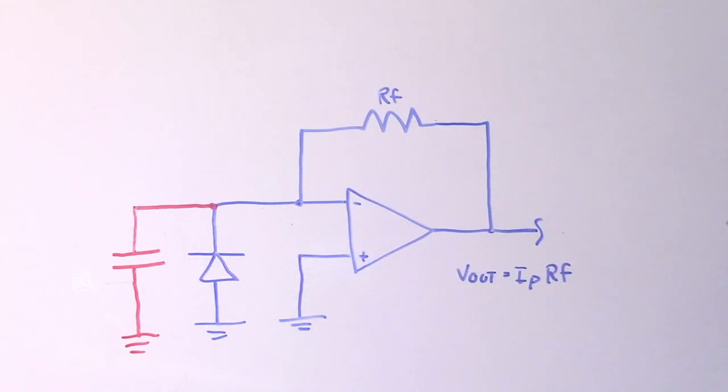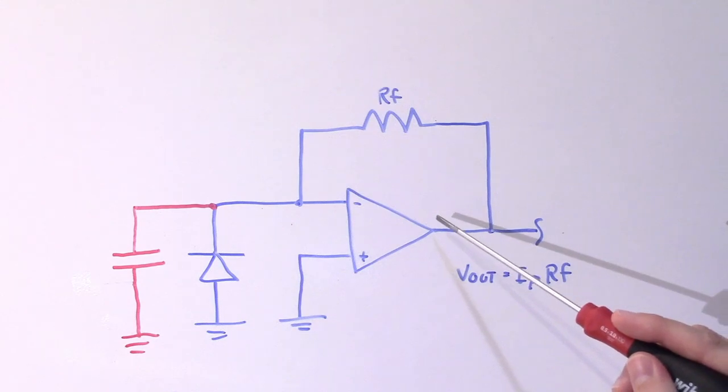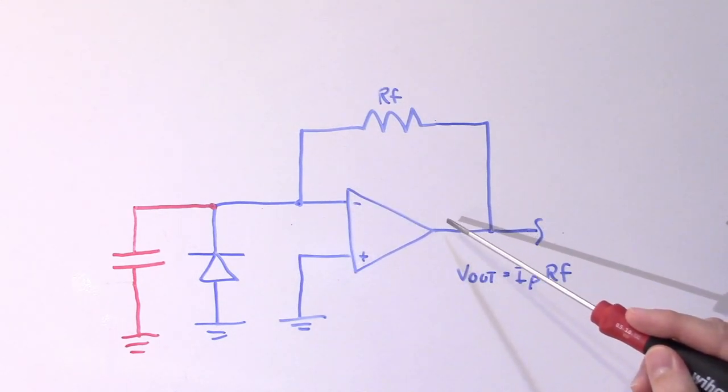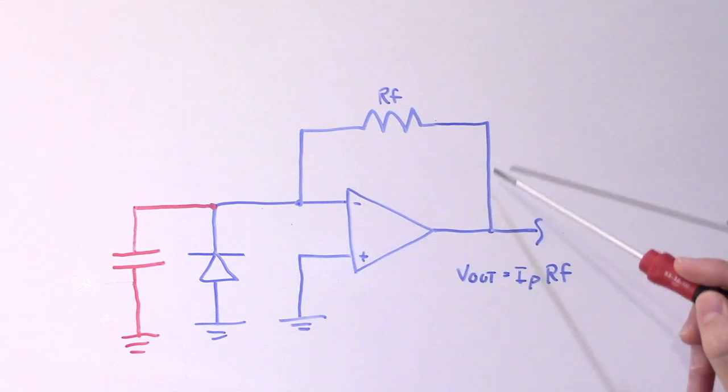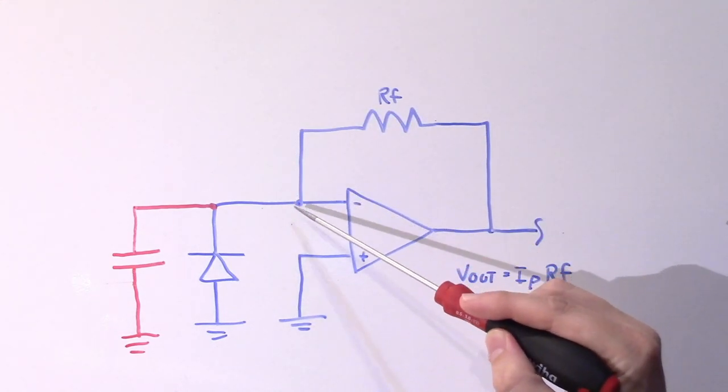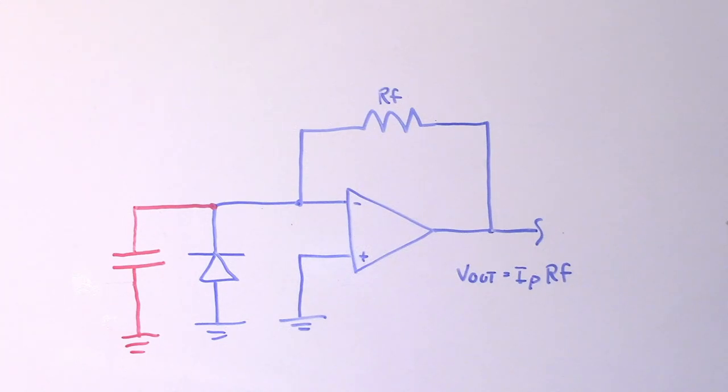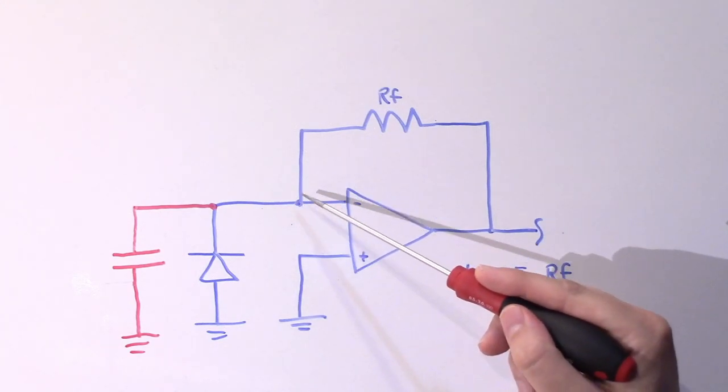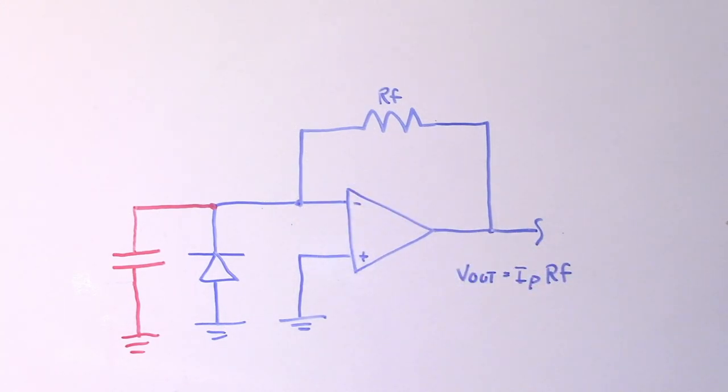And at some frequency, that phase shift is going to be 180 degrees. Now, of course, the op amp, since it's an inverting configuration, has already flipped the signal by 180 degrees. So if this feedback network flips it by another 180 degrees, we have positive feedback. And so if your gain at that particular frequency where you get that positive feedback is one or more, then you have some really good conditions for oscillation here. And that's almost always unwanted in this type of circuit.